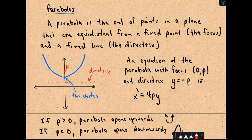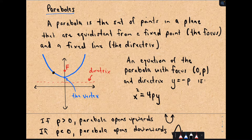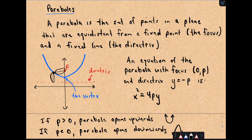So let's start with parabolas. A parabola is a set of points in a plane that are equidistant from a fixed point, which is called the focus, and a fixed line, which is known as the directrix. The basic idea is if you take a point and look at the distance from that point to the focus, it's going to be the exact same distance to the directrix. If we do this for all points in the plane that satisfy that, we'll get our parabola.